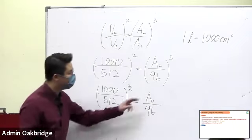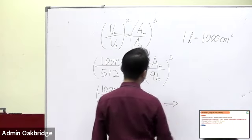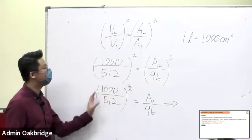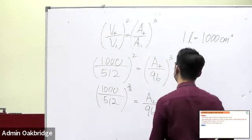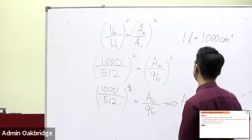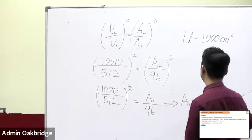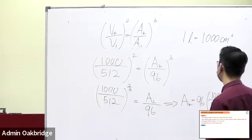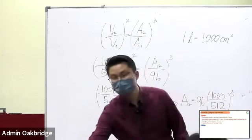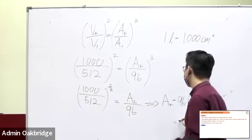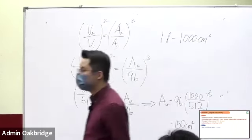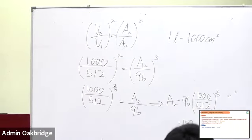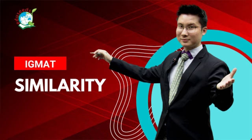Now we are getting A2. The final answer is 150 cm squared. That's it. I think I will just stop here, because the next topic will be a bit longer and I can't really finish within 20 minutes. So we'll just stop here. Thanks.